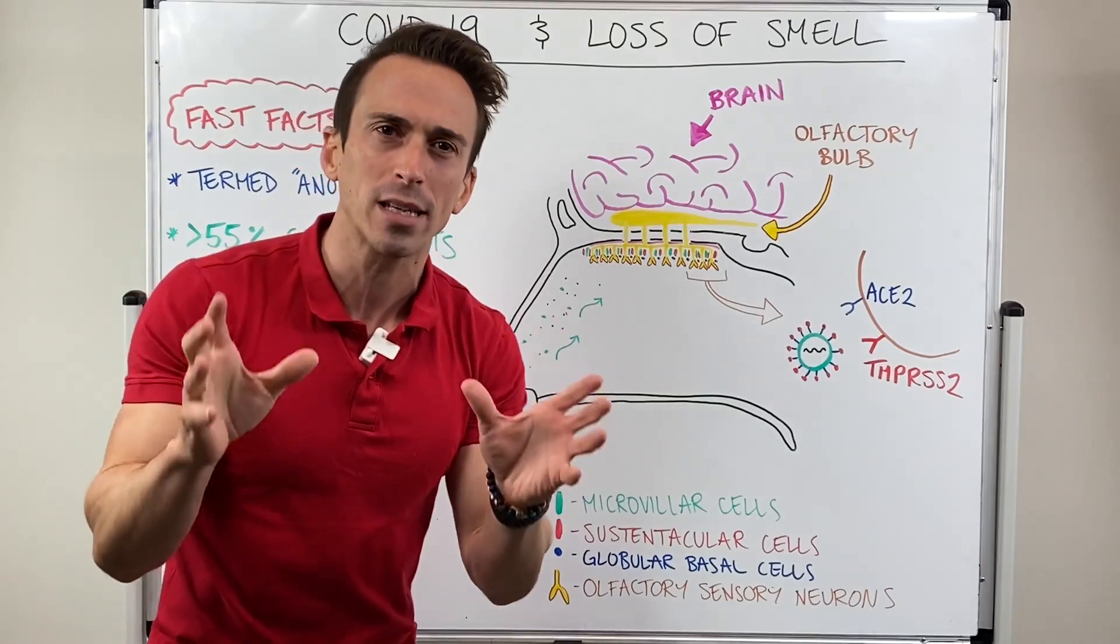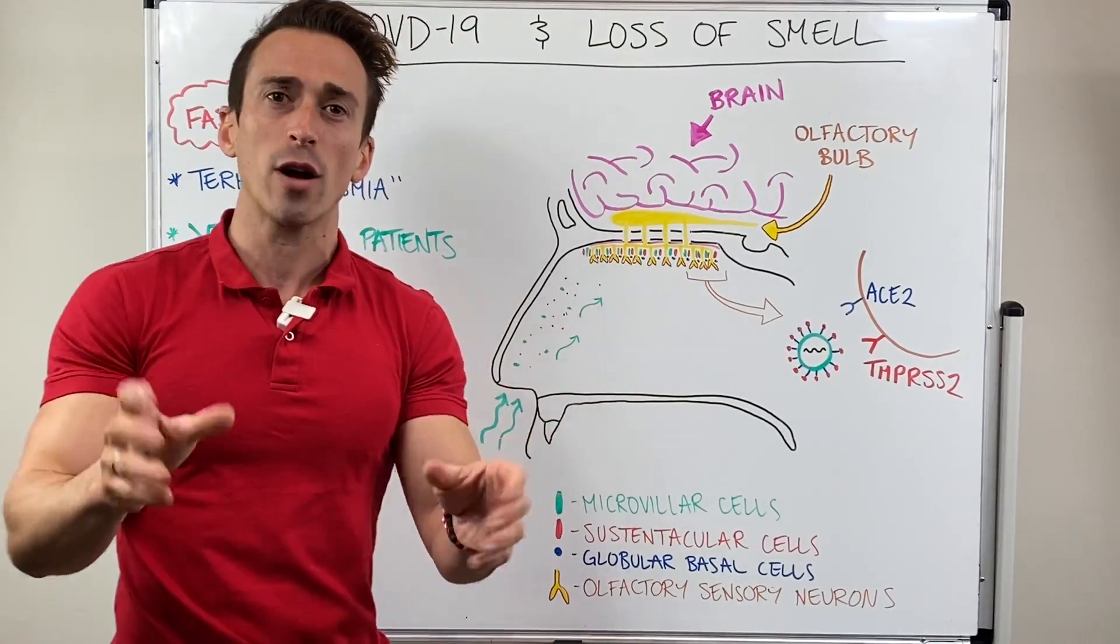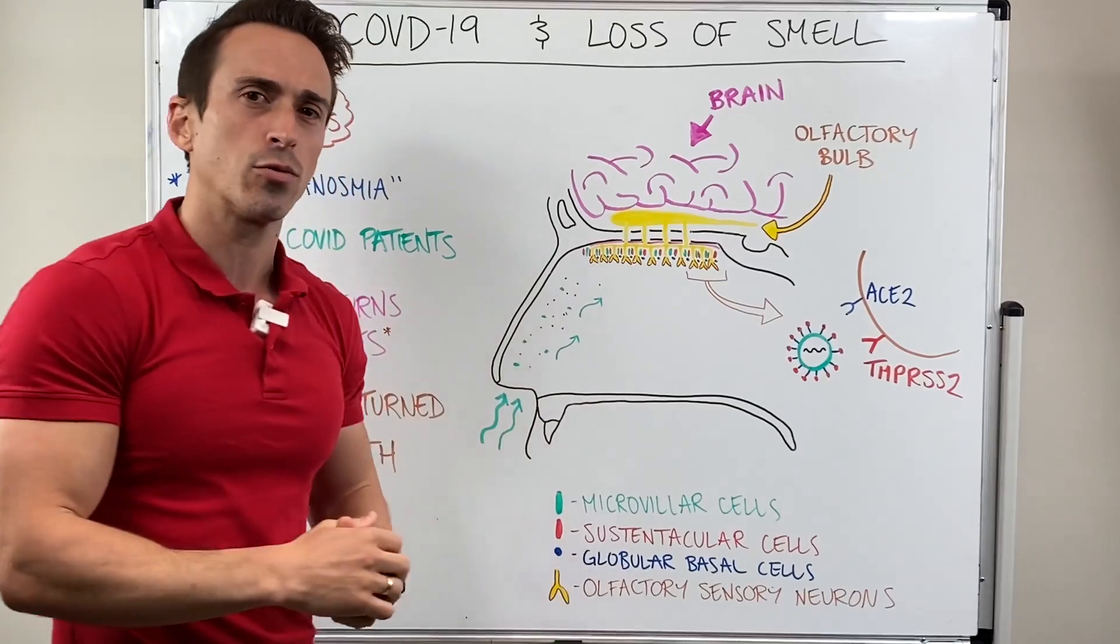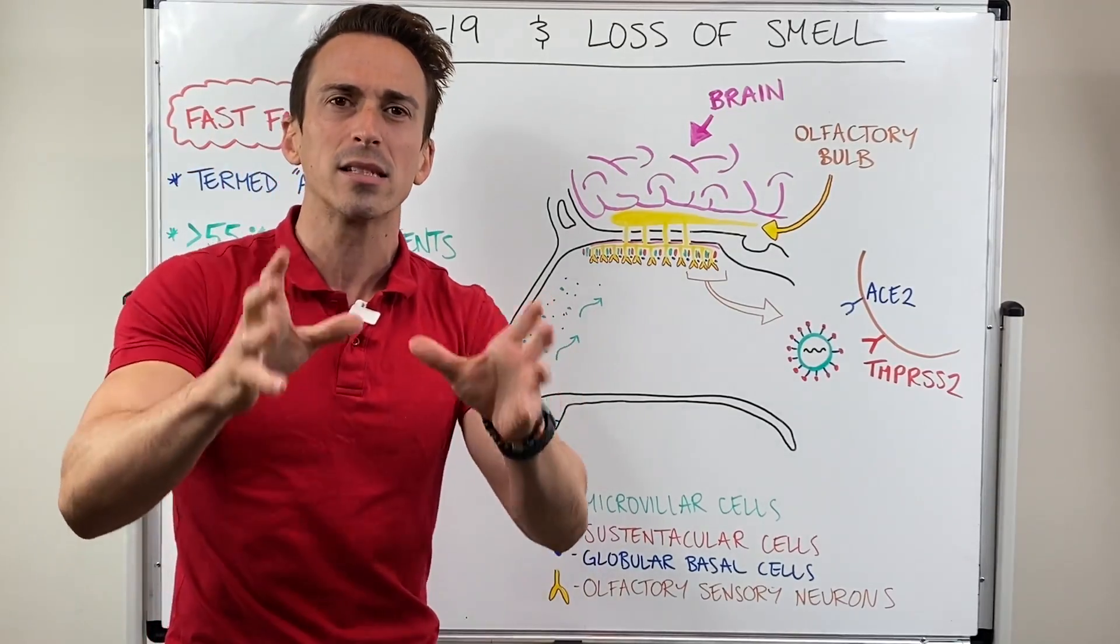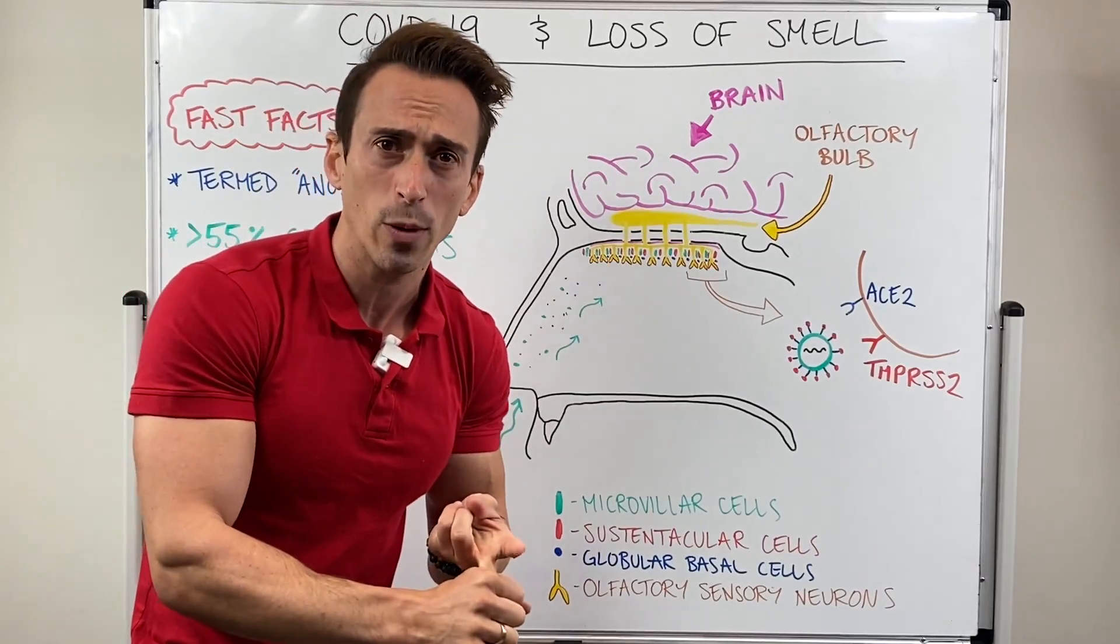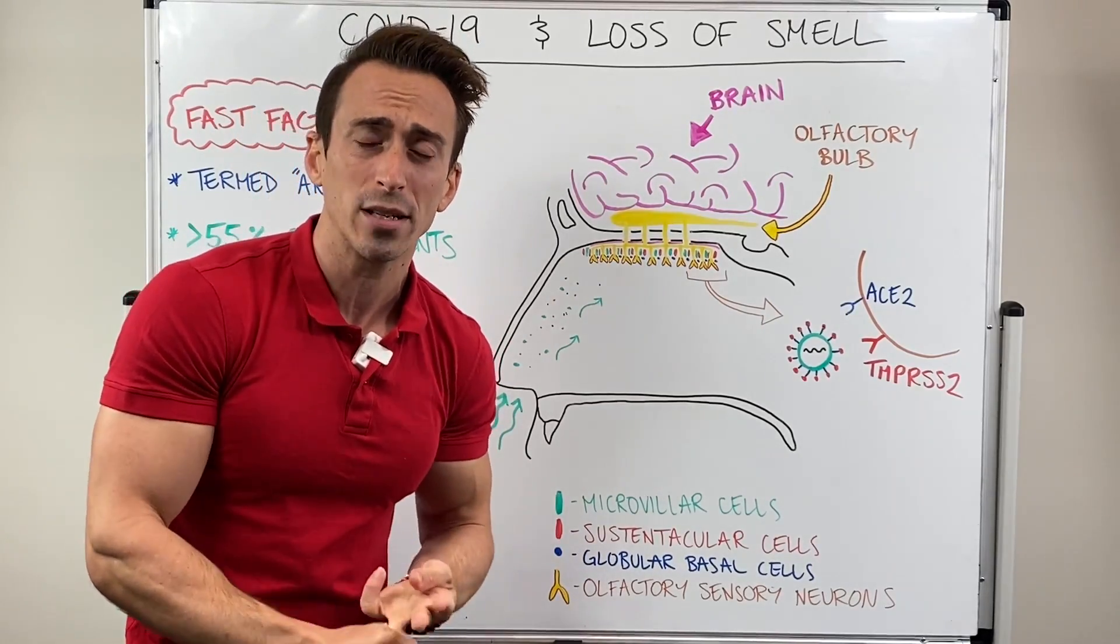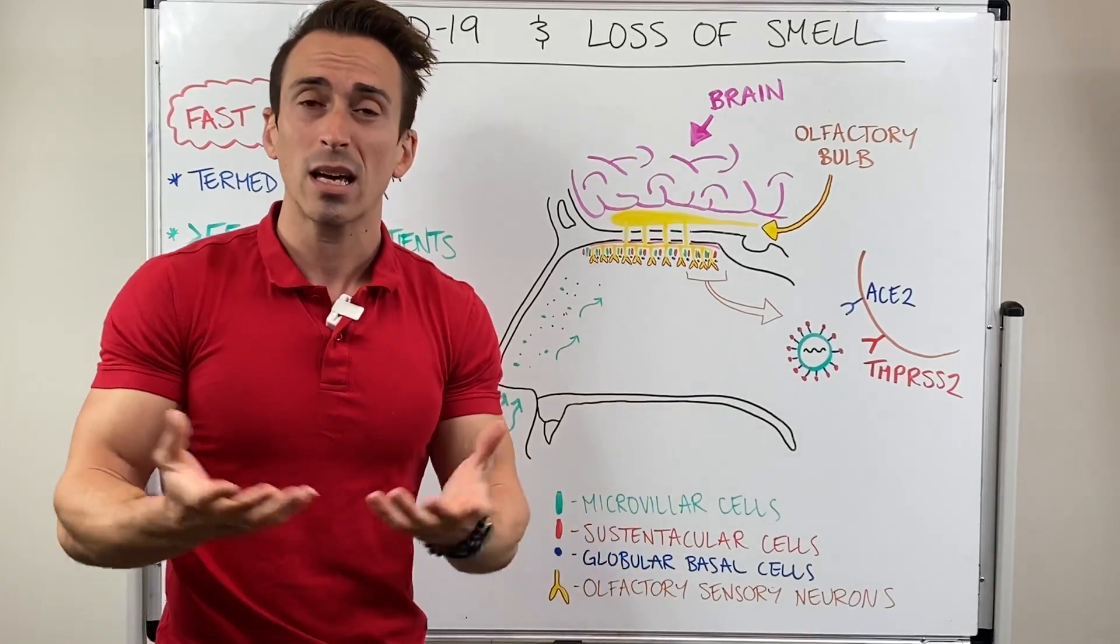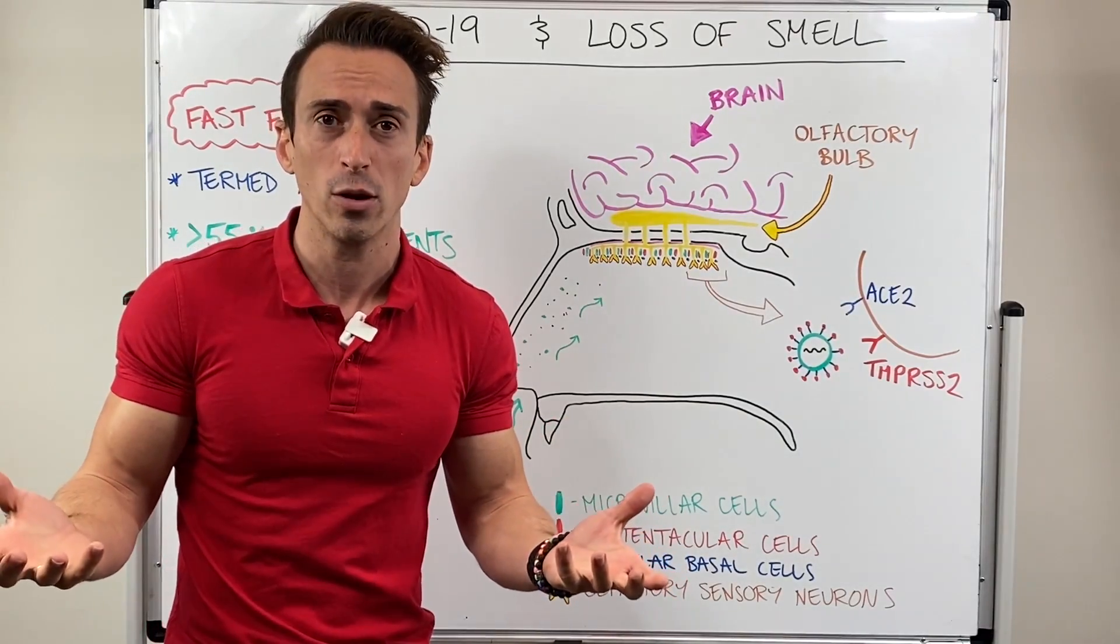I like to think of this as a race car driver. The race car driver seems to do all the work—the race car driver is the olfactory sensory neurons. However, without its supporting team, without people there to refuel the car, to fix the car when it's damaged, to tell the driver where to go, over a short period of time, the car's just gonna stop and the driver's gonna be non-functional.